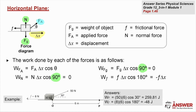The applied force is the force that's actually causing the object to move from left to right. There's an angle theta between the applied force and delta x, so we take that theta, plug it into the equation — cosine of theta multiplied by delta x multiplied by the force — which gives us the amount of work done by the applied force. The friction opposes that movement, and the angle between the friction and delta x is 180 degrees, so therefore the friction ends up doing negative work.